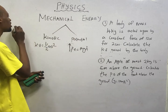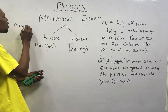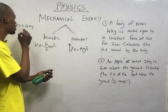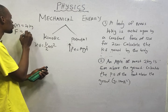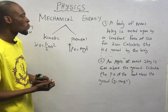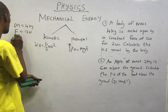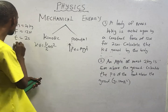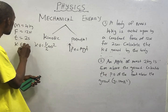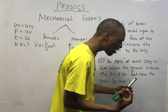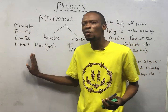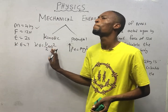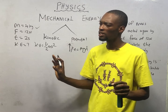Let's see a simple question requiring the application of these formulas. A fruit of mass 4 kg is acted upon by a constant force of 12 N for 2 seconds. So we have: M = 4 kg, F = 12 N, T = 2 seconds. We are asked to calculate kinetic energy. Kinetic energy requires us to have mass, which we have, and velocity — but we do not have velocity here.